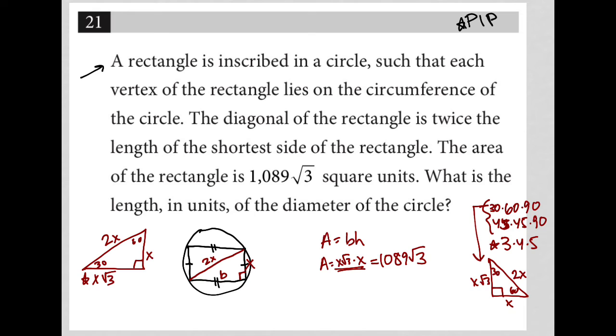I can simplify this into X squared root 3 equals 1089 root 3. I can then, in my effort to solve for X - which I think is what I'm solving for - let me just keep reading and make sure.